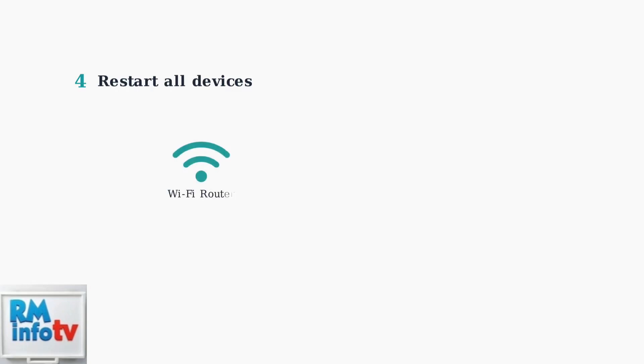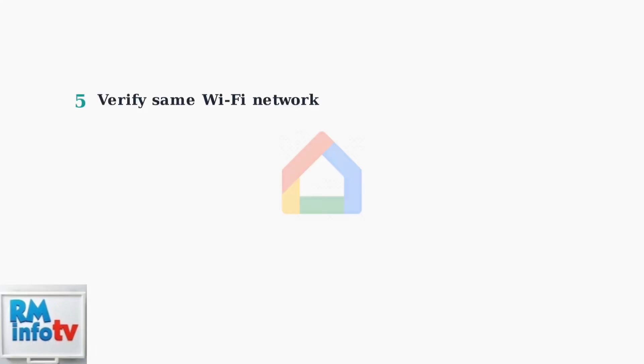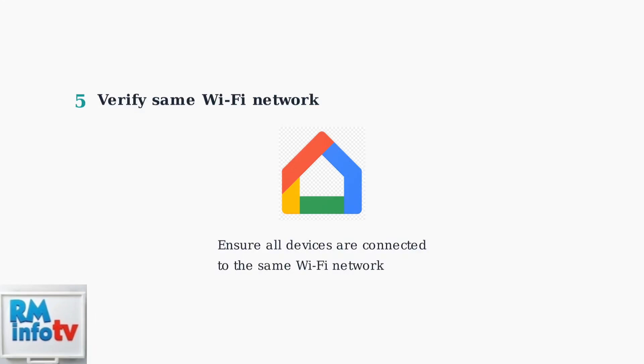If problems persist, restart your Wi-Fi router, Google Nest speakers, and Wiz devices. Power cycle them in this order: router first, then Google devices, then Wizbulbs. Make sure your lights and Google Assistant devices are all connected to the same Wi-Fi network, as different networks prevent proper communication.